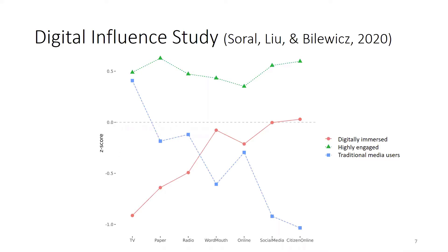We did one study asking Polish participants where they get their information. We gave them several options — television, newspapers, radio, word of mouth, online news websites, social media, or online citizen journalism. We found three types of users. The green line represents highly immersed users who consume a lot of all media — TV, newspapers, radio, online websites, social media, and citizen journalism.